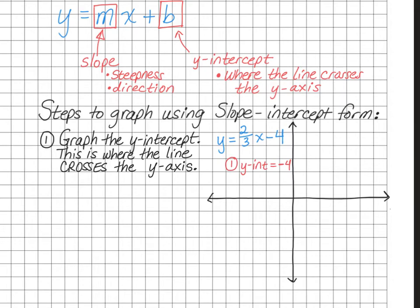So on our graph, we're going to count from the origin — remember, this is the y-axis — and the y-intercept is negative 4. So from the origin, I'm going to count down to negative 4: 1, 2, 3, 4. This is the point where the line will cross the y-axis, so I'm going to put a point right on that y-intercept.